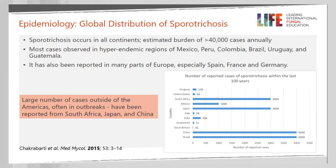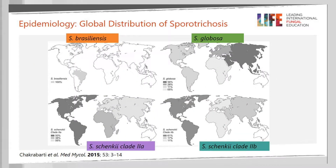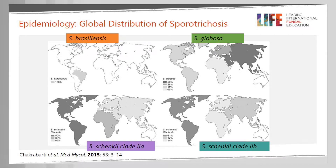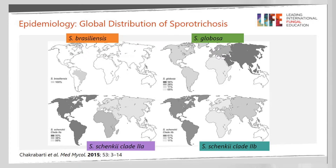In Europe, cases are reported in a few countries like Spain, France, and Germany. Remember that we have three species. Sporothrix brasiliensis is located only in Brazil, especially in the south, in the Rio de Janeiro area. Sporothrix globosa is from Asia, but we have some reports in America. And Sporothrix schenckii sensu stricto has two clades — clade 2A and 2B — with clade 2B being the most important.